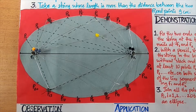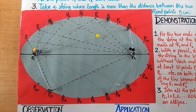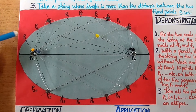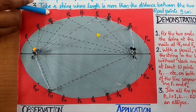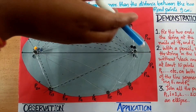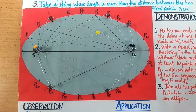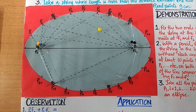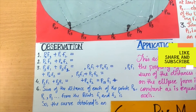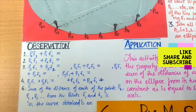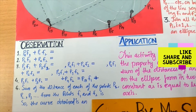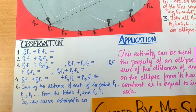Now, if we take different points and mark at least 10 points — P1, P2, P3, P4, P5, and so on — on both sides of the line segment joining F1 and F2, we observe that P1F1 plus P1F2 equals the length of the string, which is constant.